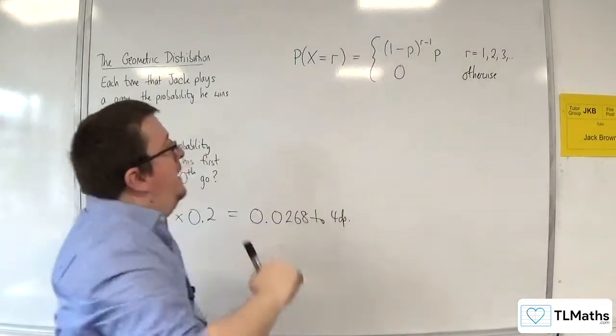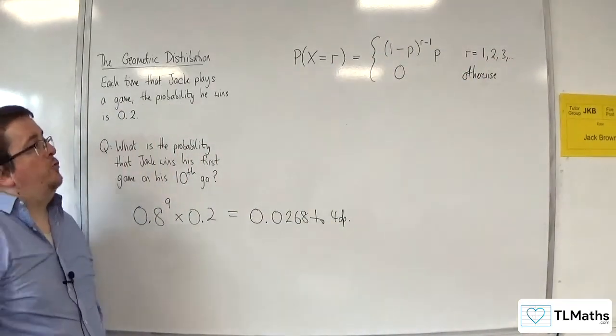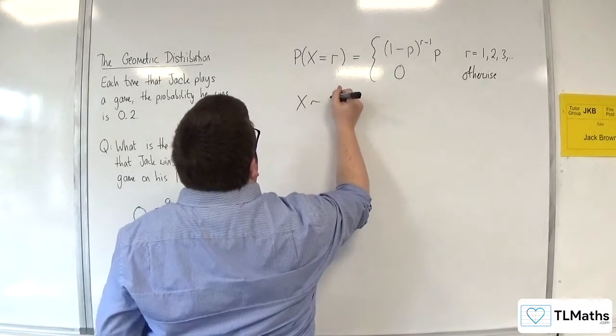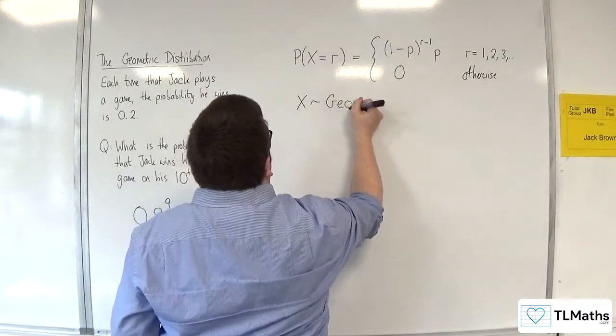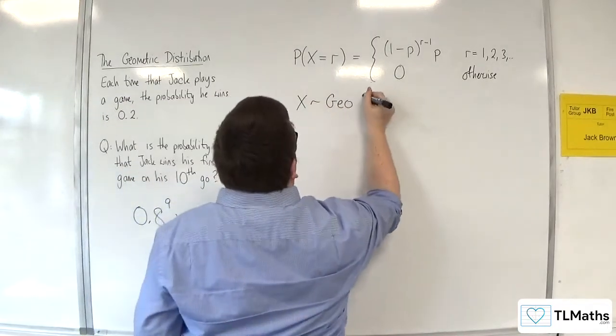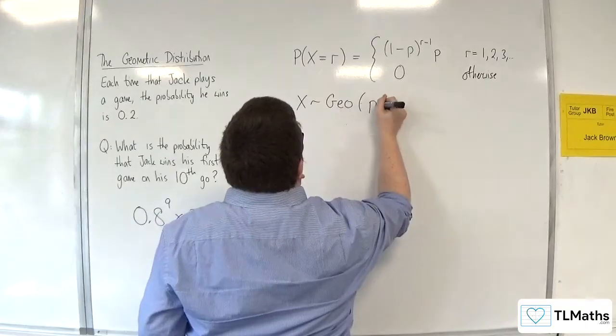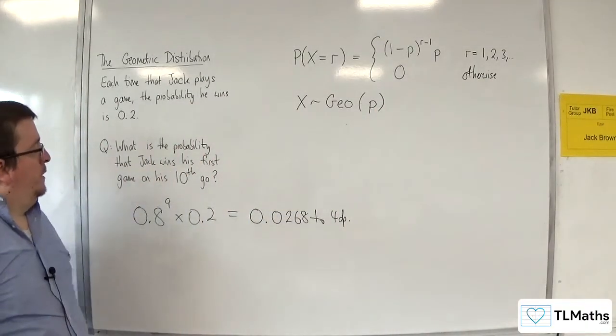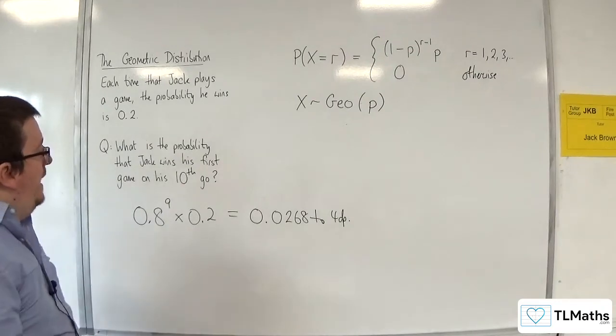So this is the geometric distribution, and we write it as X tilde GEO. So X is a geometric distribution, and it's only got one parameter, P, the probability of success. In the case that we're looking at here, we would say that X is a geometric distribution where P is 0.2.